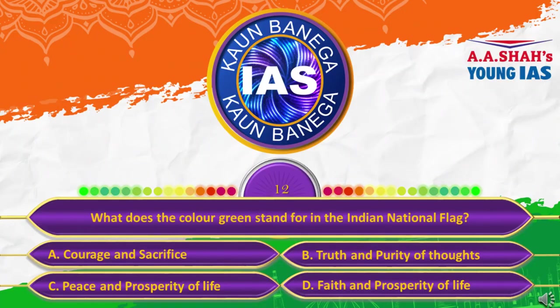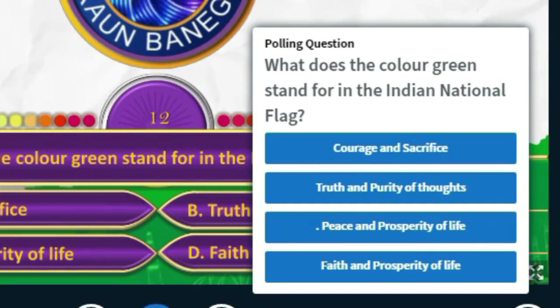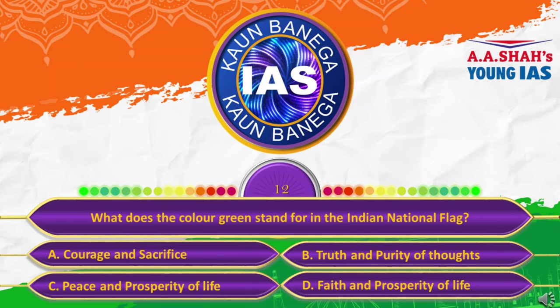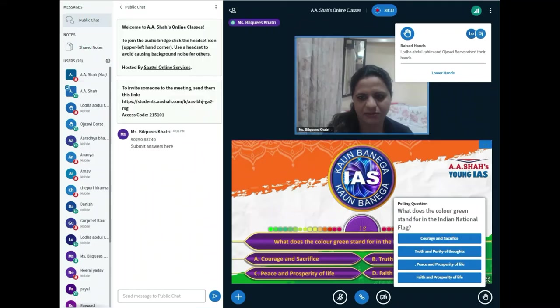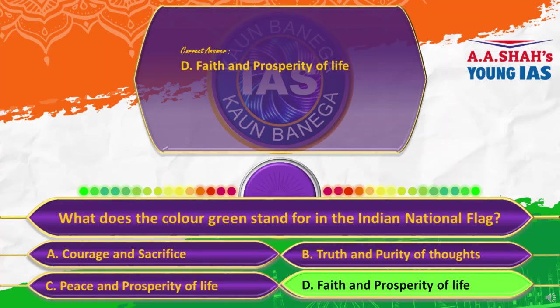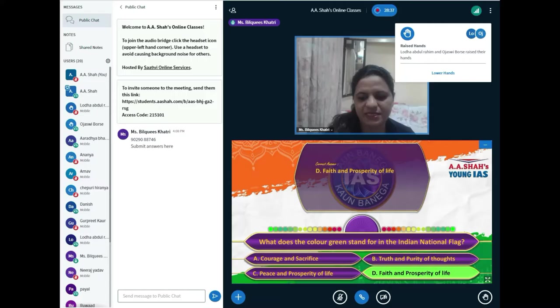The twelfth question: What does the color green stand for in the Indian national flag? A, courage and sacrifice; B, truth and purity of thoughts; C, peace and prosperity of life; or D, faith and prosperity of life. The correct answer is D, faith and prosperity of life. White stands for peace and truth, and saffron stands for courage and sacrifice. Green stands for faith and prosperity of life.